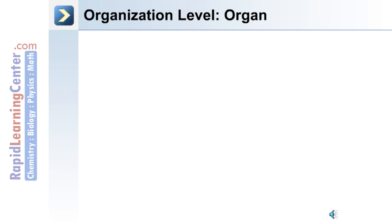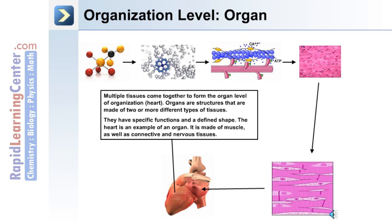Following the tissue level is the organ level. Organs are structures made of two or more different types of tissues; they have specific functions and a defined shape. For example, the heart is made of muscle as well as connective and nervous tissue.